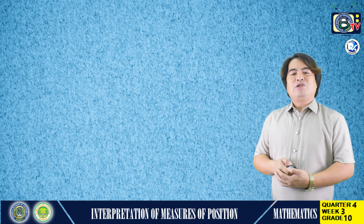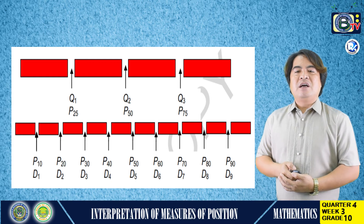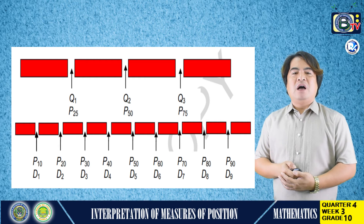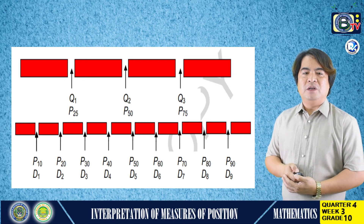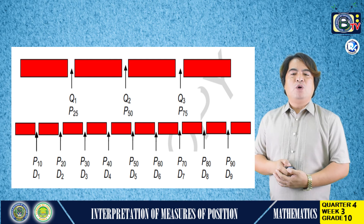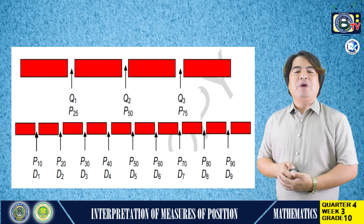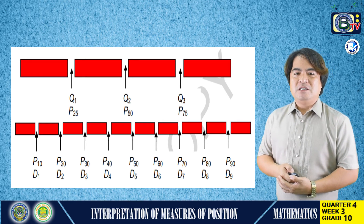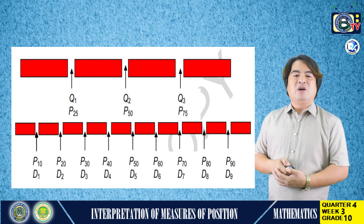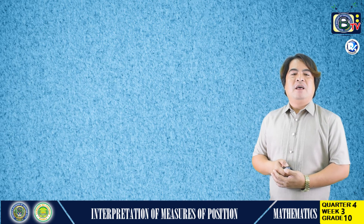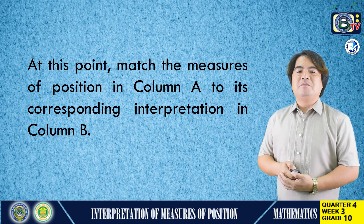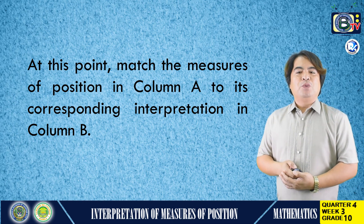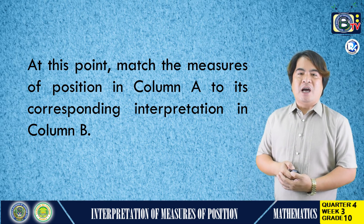You may also use the diagram below as your basis in interpreting measures of position. I hope you are now able to interpret measures of position. Is it clear now, my dear learners? At this point, match the measures of position in column A to its corresponding interpretation in column B.